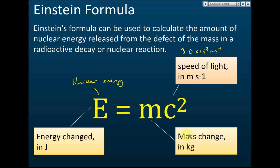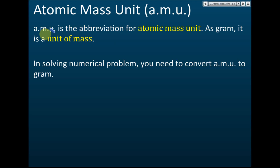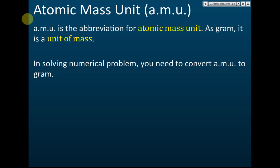That's Einstein's formula — just copy it and label it: nuclear energy, mass defect, and speed of light. Atomic mass unit, AMU, is the abbreviation for atomic mass unit. Just as gram is a unit of mass, AMU is also a measure of mass. In solving numerical problems, you need to convert AMU to gram or kilogram. If you want to use Einstein's formula, you must convert it to kilogram.